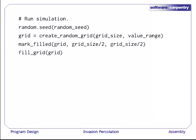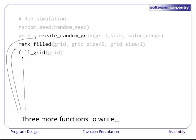The next step is to run the simulation. We do that by seeding the random number generator, creating a random grid, marking the center cell as filled, and then filling the rest of the grid. In this code, we've used three functions that don't exist yet, so we're going to have to go back and write them. Before we do that, though, let's finish off the main body of the program.